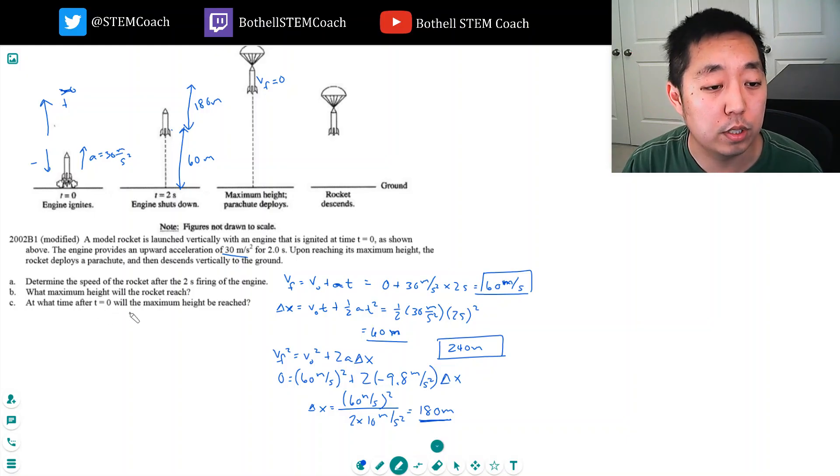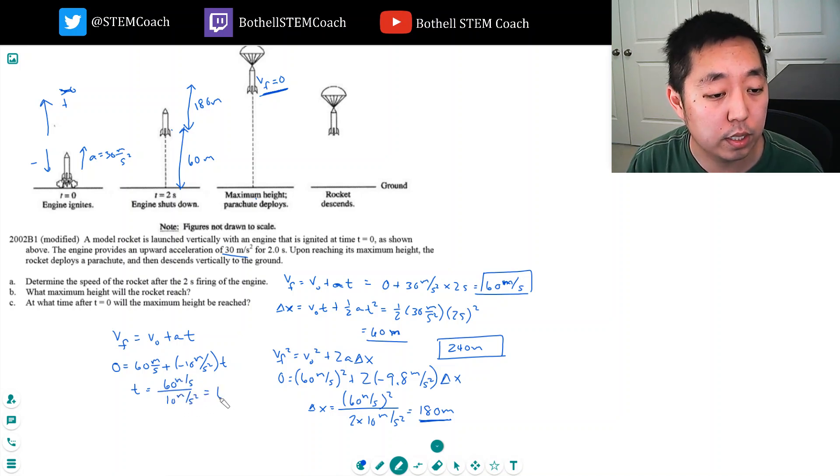And now at what time after t equals 0 will the maximum height be reached? So the maximum height, we already achieved it, we just need to know how long it takes to get there. So it's 2 seconds till we shut down the engine, and then however much time until we reach the maximum height. Here we can use a couple equations. What I do know is the final velocity and the initial velocity and the acceleration, so I'm thinking I use this equation. This is probably the most direct one, the same equation we use in part A. It's just now I know the final velocity would be 0, the initial velocity is the initial velocity here, and that's 60 meters per second, plus minus 10 meters per second squared times t. So t would be 60 meters per second over 10 meters per second squared, that would be 6 seconds.